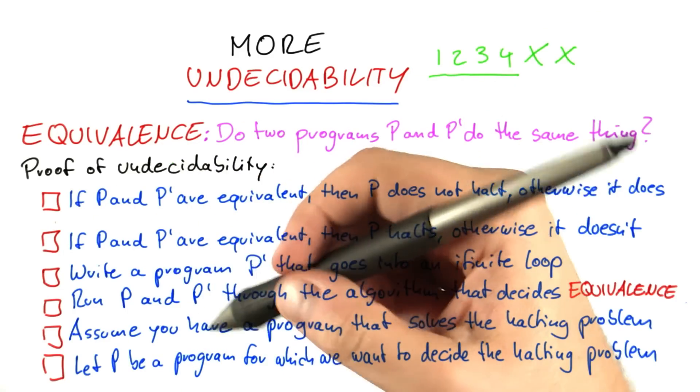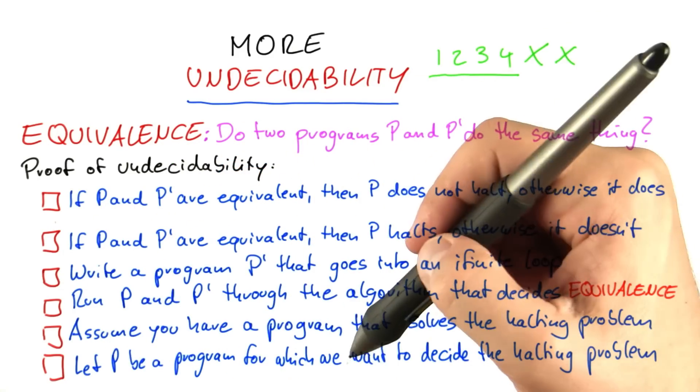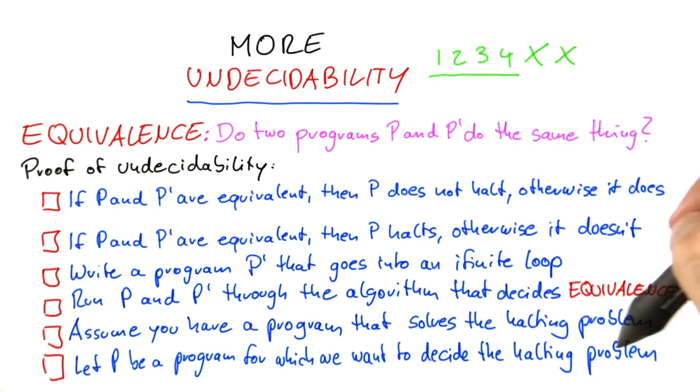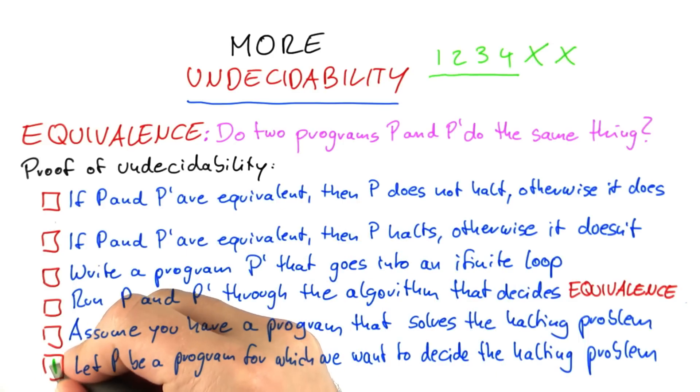So to show that equivalence is undecidable, we should first start out with a program for which we want to decide the halting problem. And that should be p. So we start out with this step here.